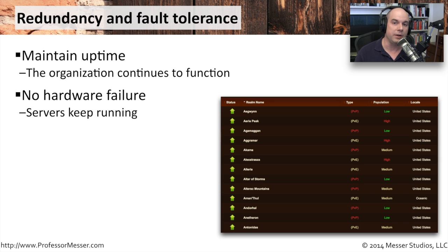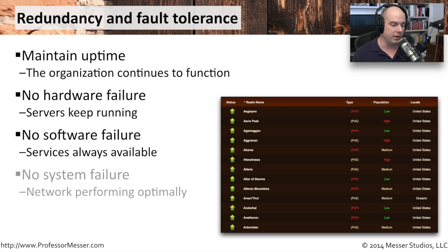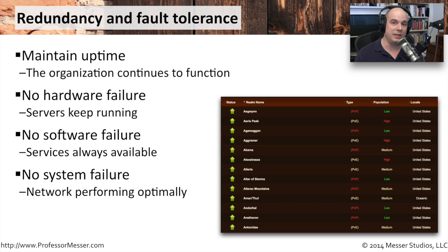We need to make sure that we don't have a hardware failure. We may want to have redundant servers, or within a single server, redundant power supplies. By keeping those redundancies, if we lose a power supply or a motherboard, we've got another one ready to take its place. We also need to think about the software running on these systems — software that can notify us of problems, or work in a cluster so that if one piece fails, others pick up the slack. We may also want redundant routers, redundant firewalls, and redundant wide area network links to the internet.